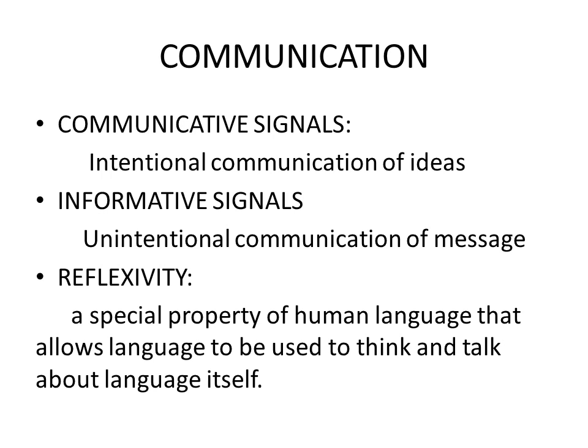The second domain is informative signals. Informative signals are types of communication done unintentionally. For example, when we have a cold, we start to rub our hands; when we have a sore throat, our voice would not be clear. That is called an informative signal. Human beings perform both types: communicative signals and informative signals.